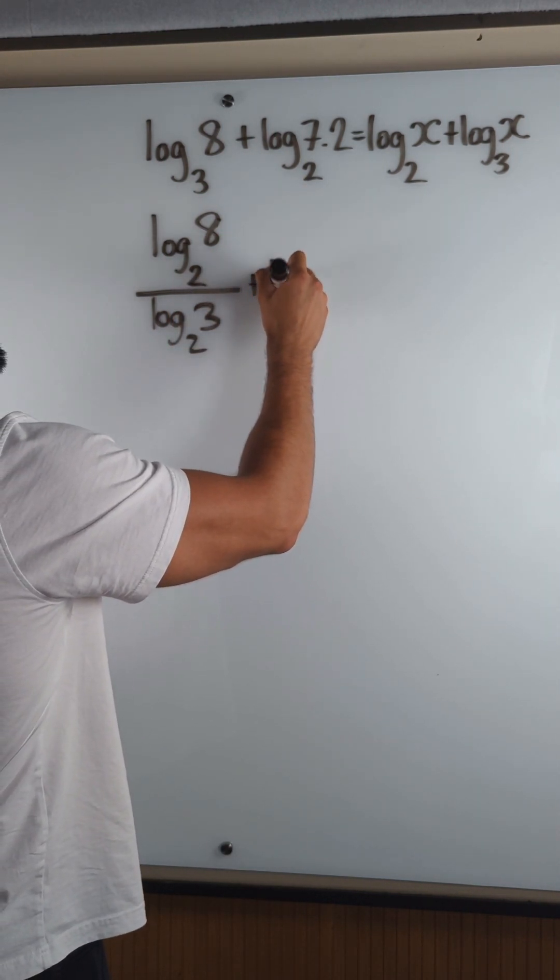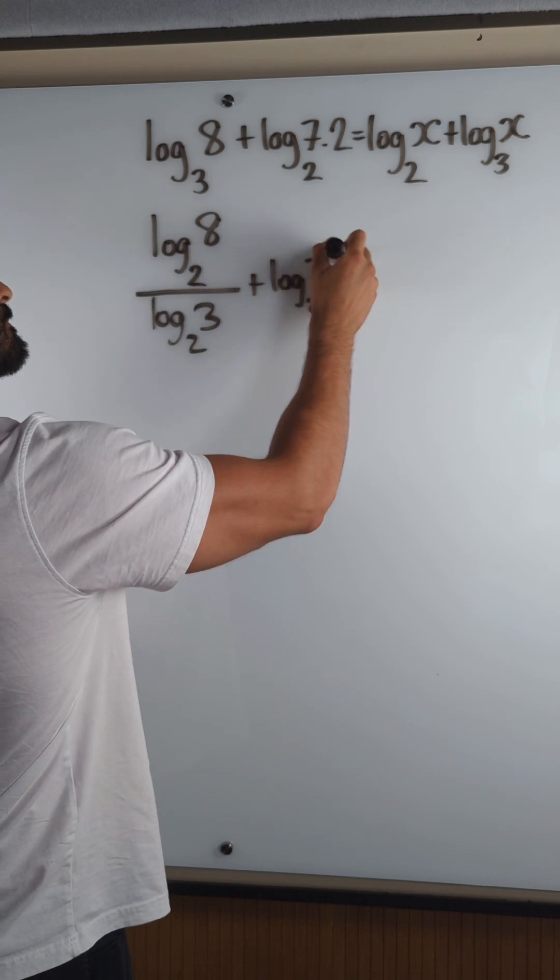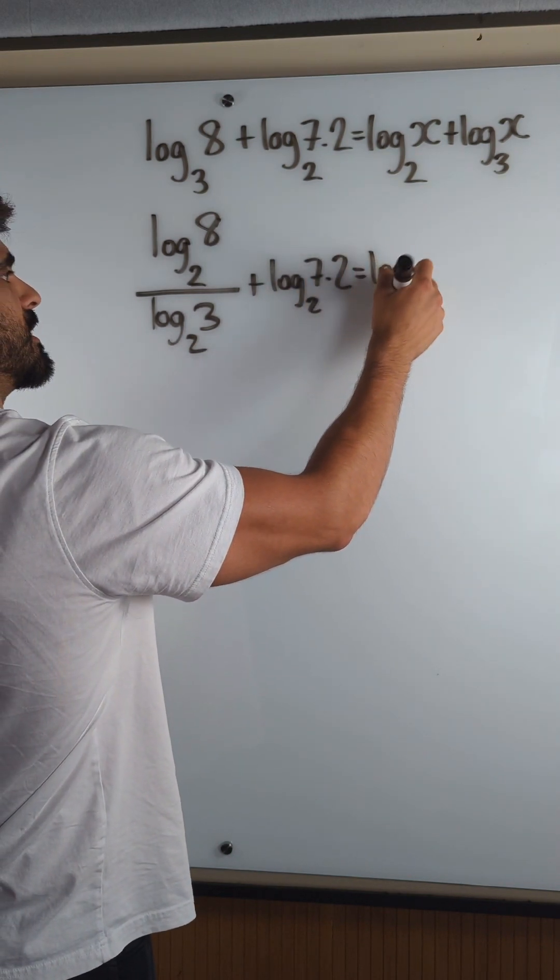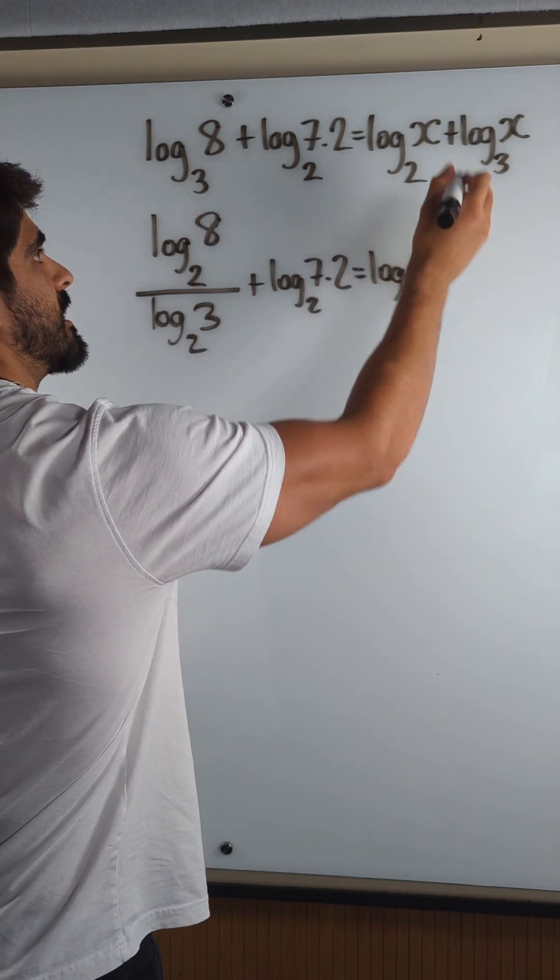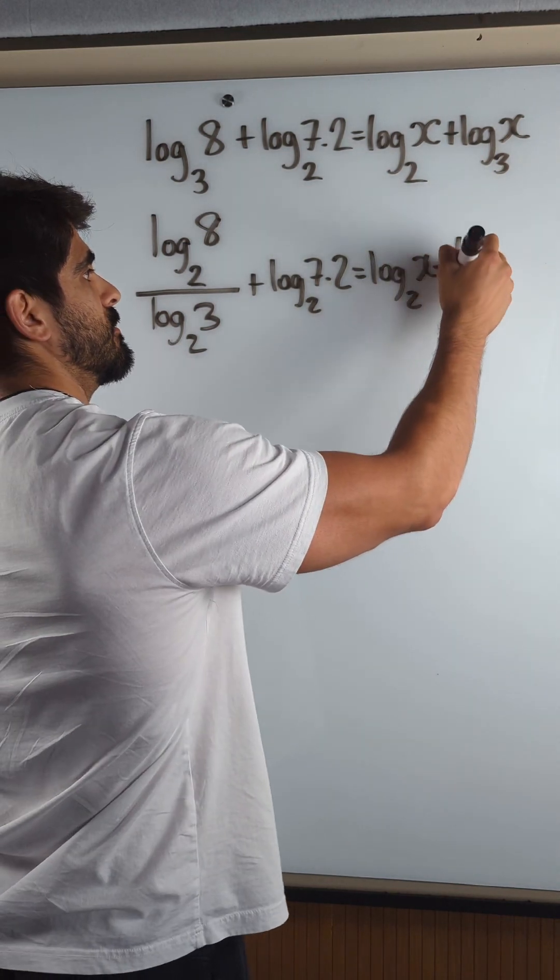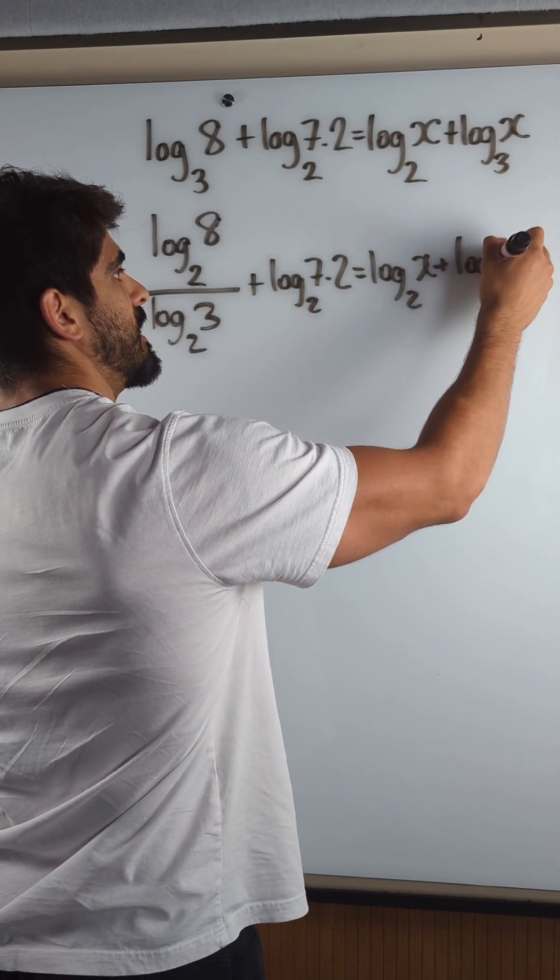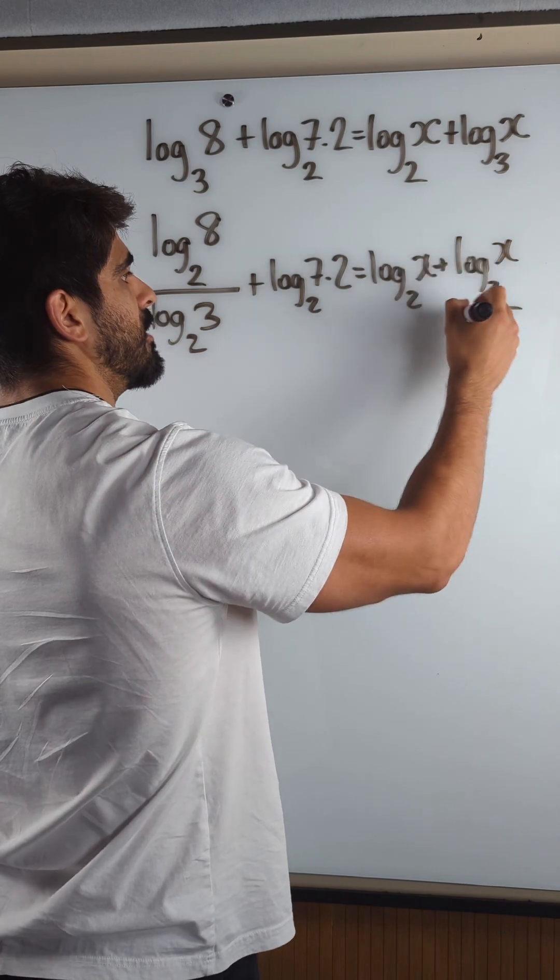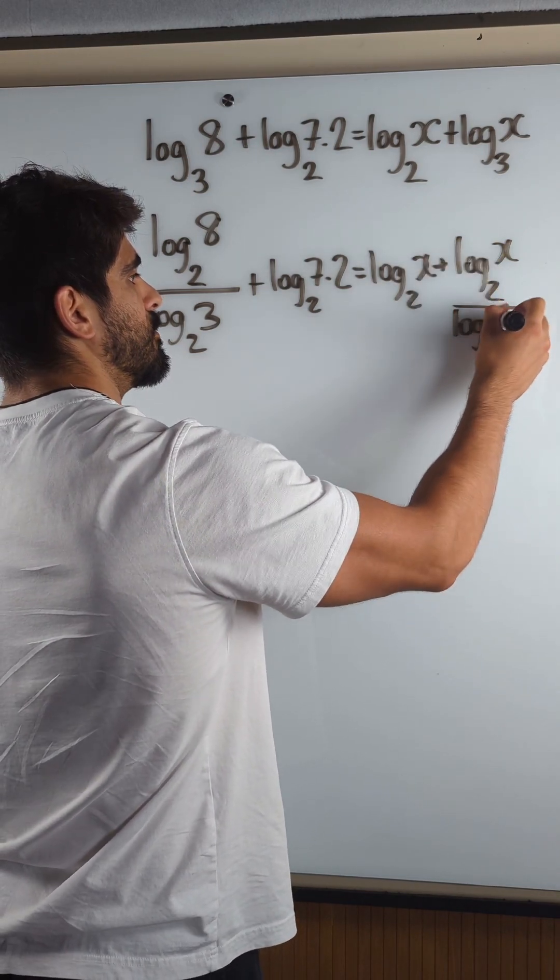Okay, here that's already log base 2. This is also log base 2. Here again, I want that to be log base 2, so just write it. Log base 2 of x, but then you have to divide by log base 2 of the old base.